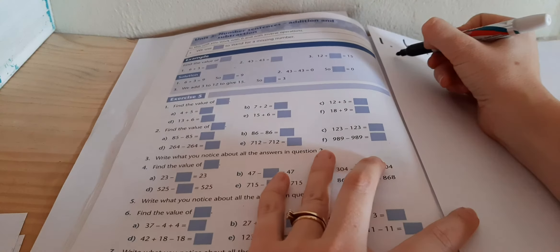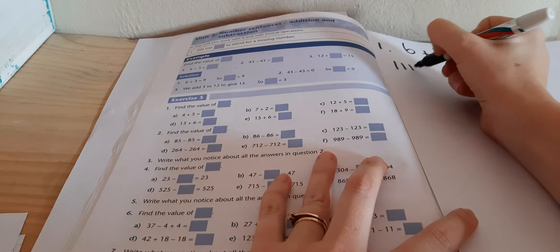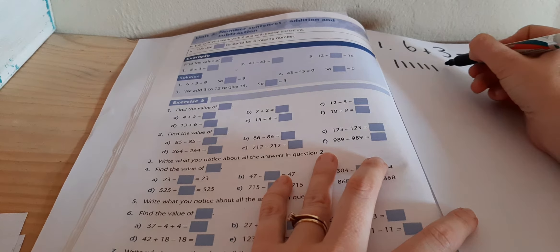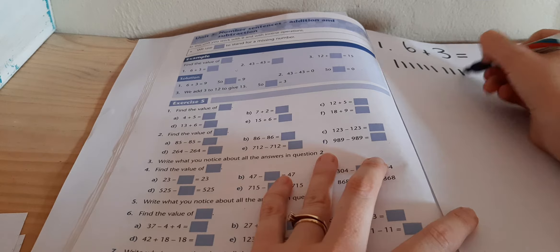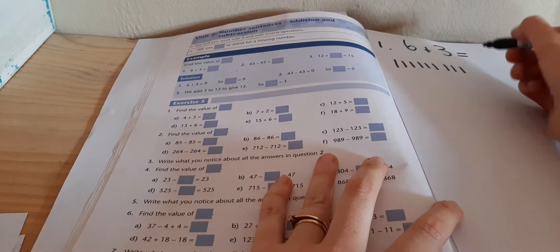If it helps you to draw 6 sticks, 1, 2, 3, 4, 5, 6 plus another 3, 6, 7, 8, 9 and count all of them all together, you'll get 9.